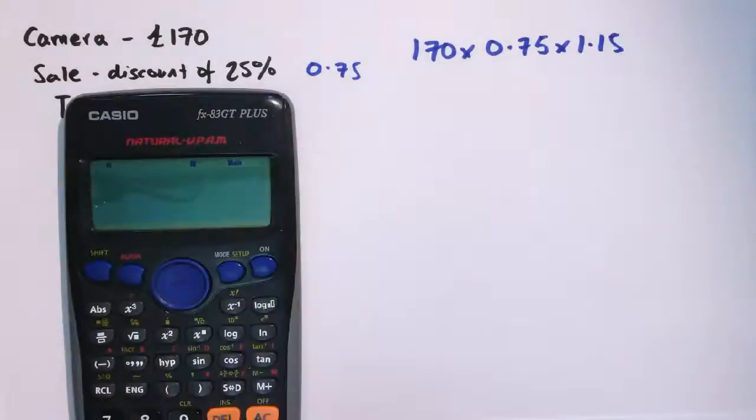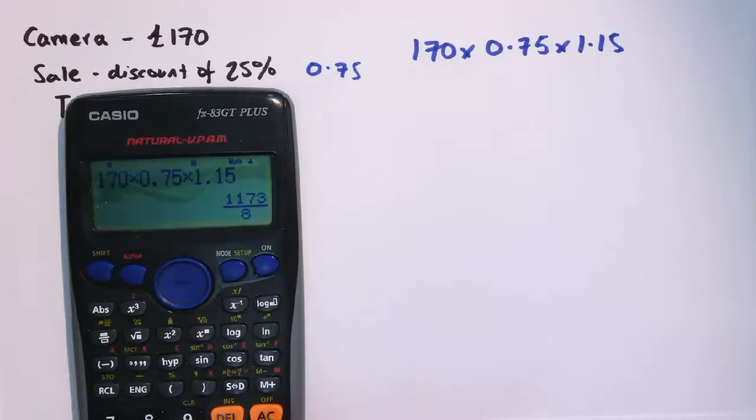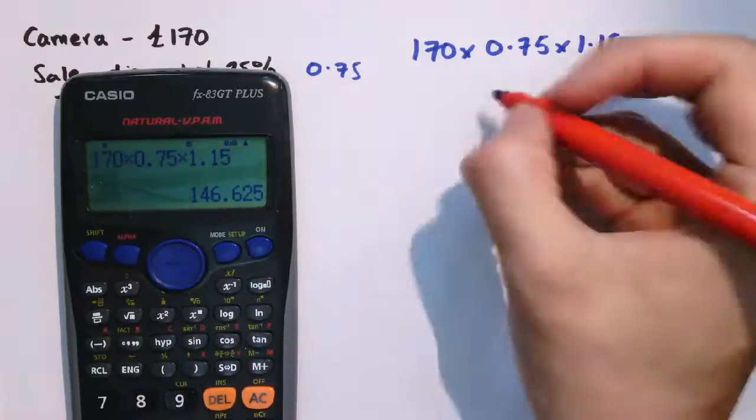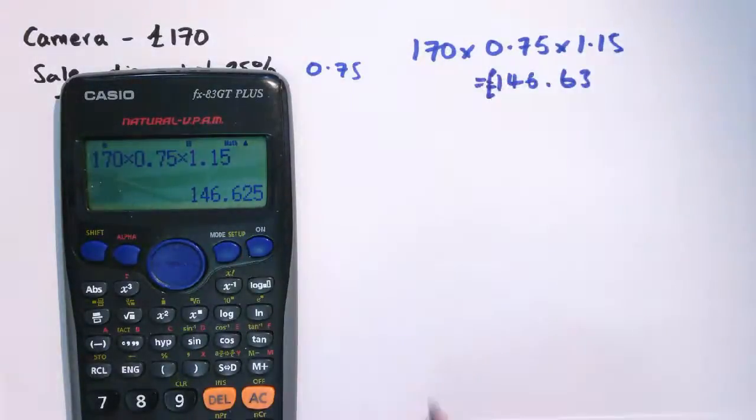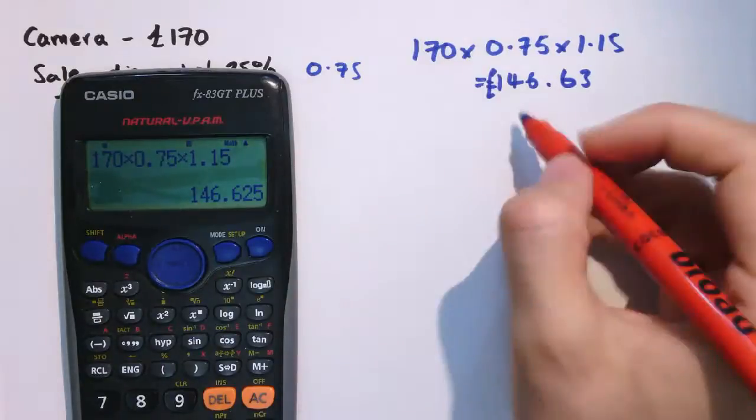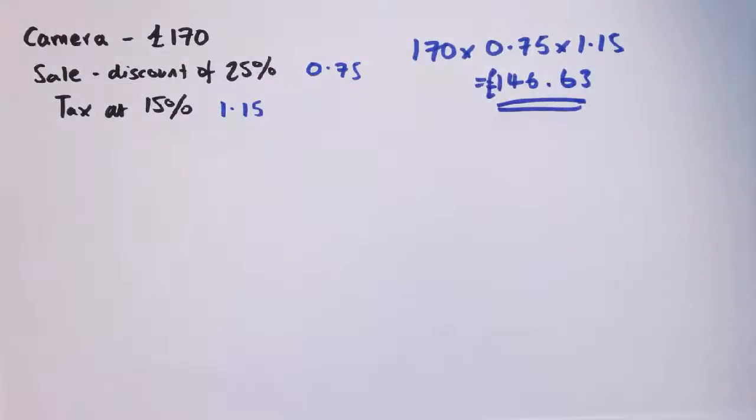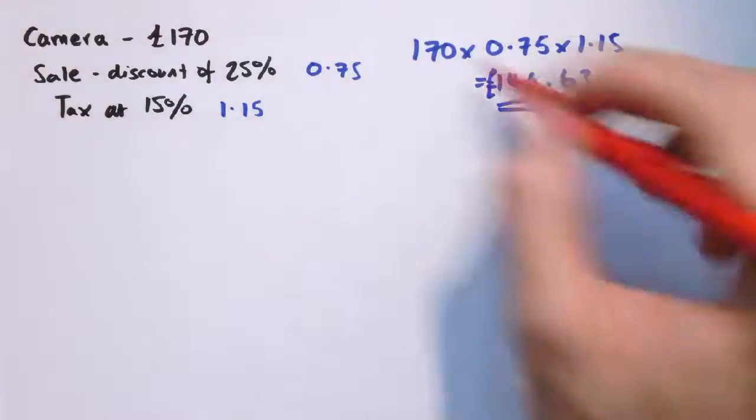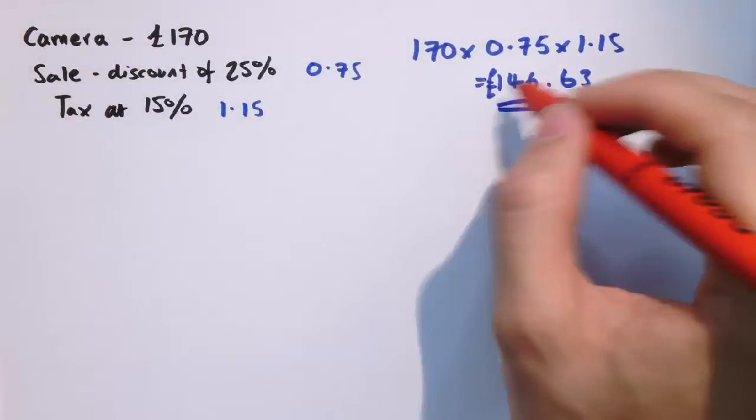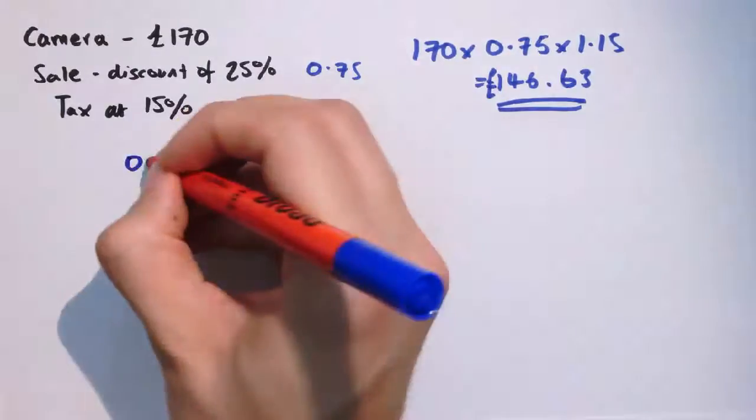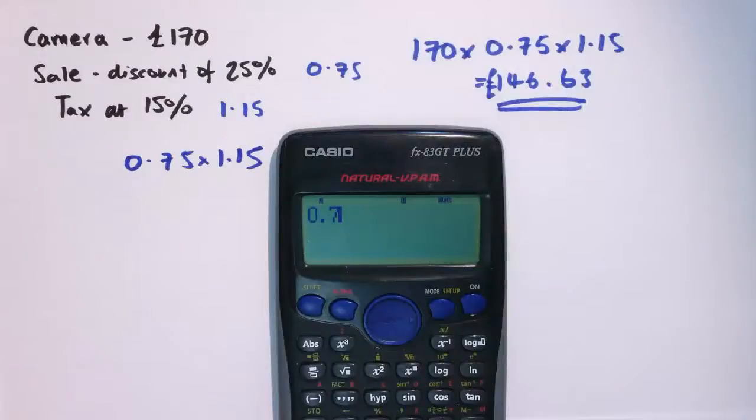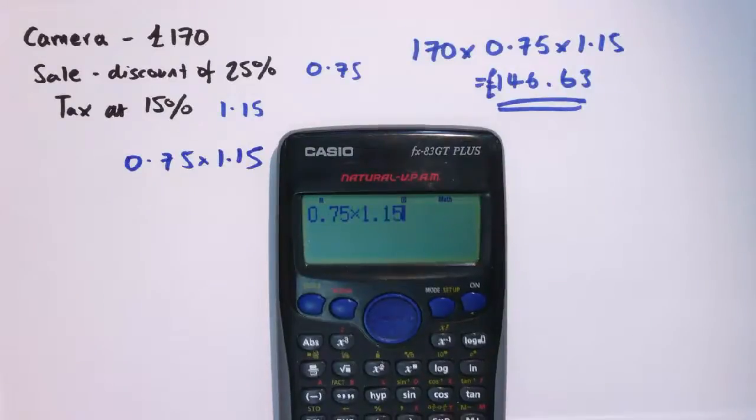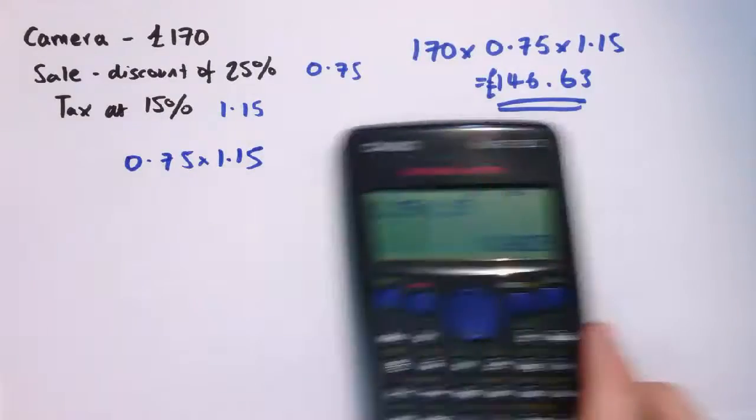So the overall cost of this item would be 170 times 0.75 for the discount times 1.15 for the tax. So we could put that into the calculator, 170 times 0.75 times 1.15, and that gives us 146.63 to the nearest penny. So the overall scale factor that's been applied to get from 170 to 146.63 is 0.75 times 1.15, that would be 0.8625.